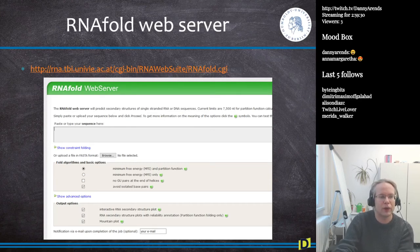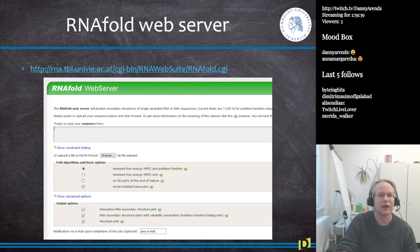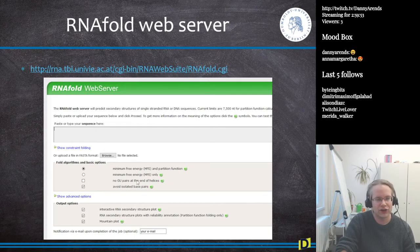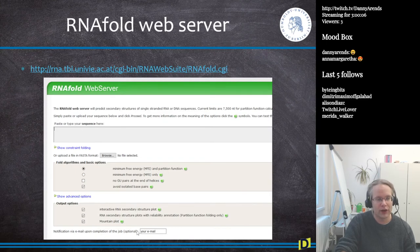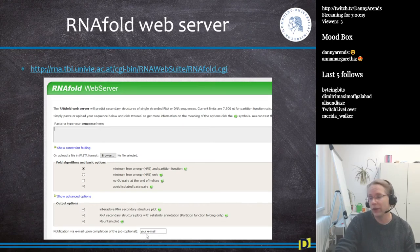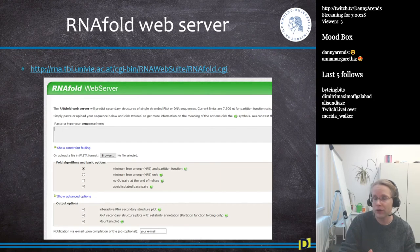The RNAfold web server is a simple two-step tool: paste your sequence or upload a FASTA file, choose an algorithm such as minimum free energy with partitioning, and click proceed. Different algorithms are available and explained in the help file. For long non-coding RNAs, prediction takes a while, so you can fill in your email address and get a notification when the prediction is done instead of waiting on the website for hours.